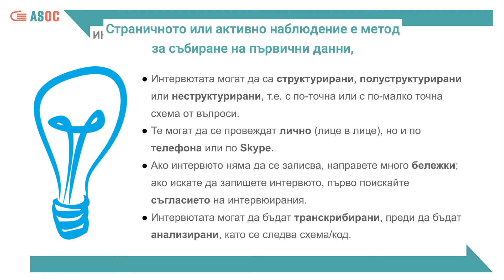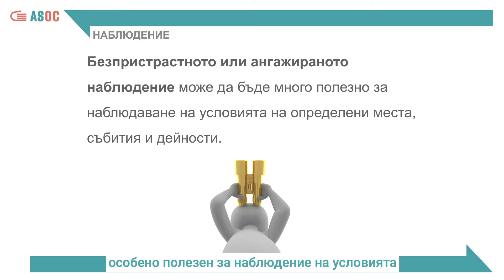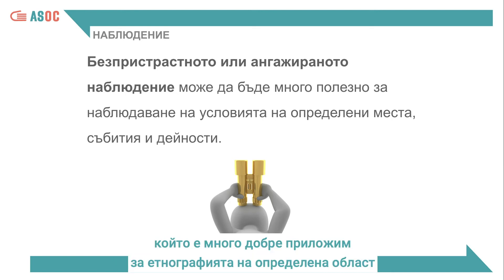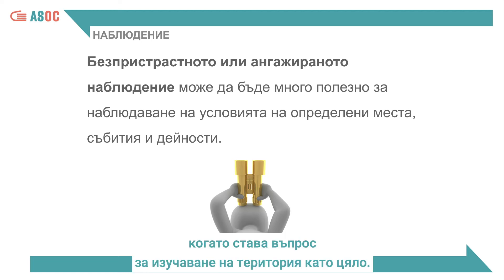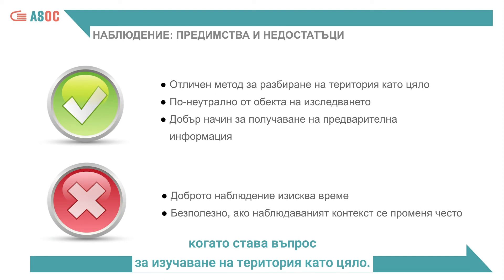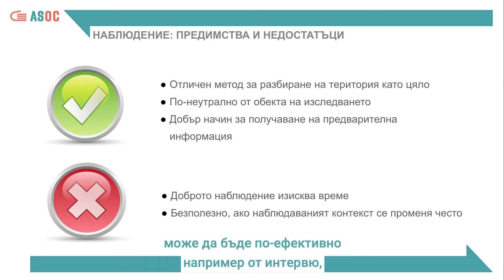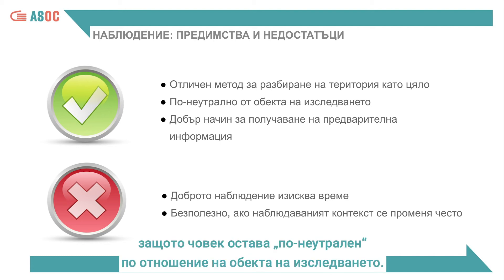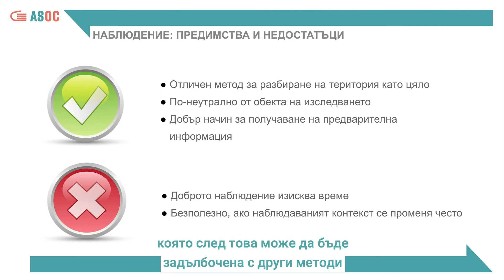Detached or engaged observation is a primary data collection method particularly useful for observing the conditions of particular places, events, and activities. It is very useful for the ethnography of a particular area or a social group. Observation is the best method for understanding a territory as a whole. Directly observing the conditions of a territory and the actions of people and groups can be more effective than an interview, because one remains more neutral regarding the subject of the research.